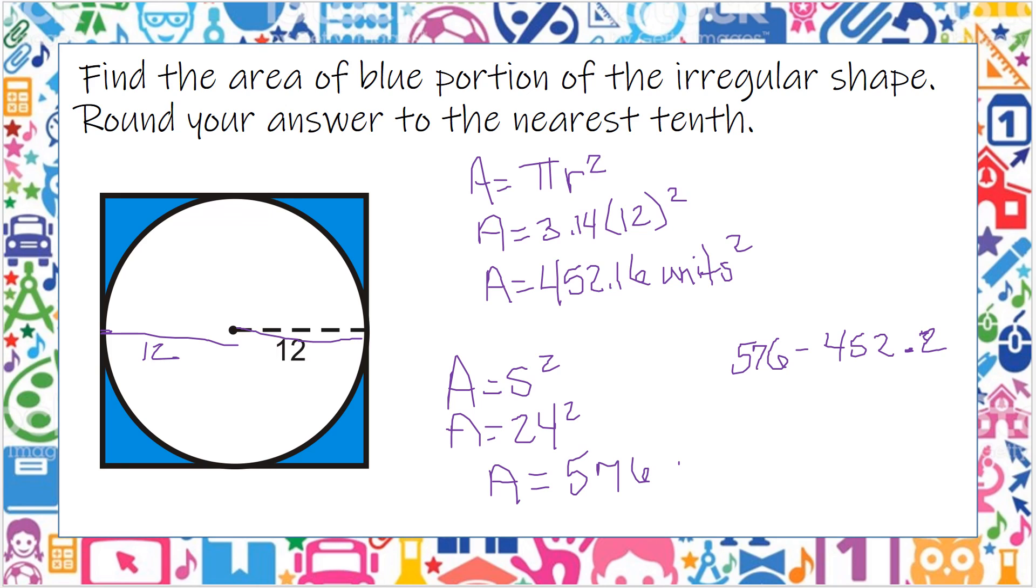So 576 minus 452.2 gives me the area is 123.8 units squared, and that is the area of the blue shaded part.